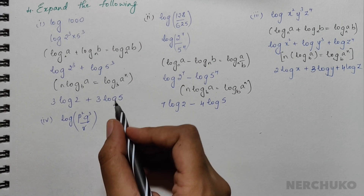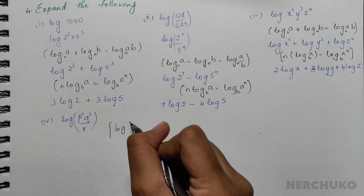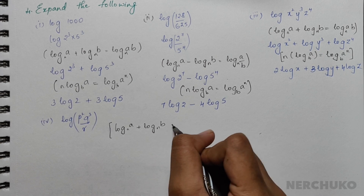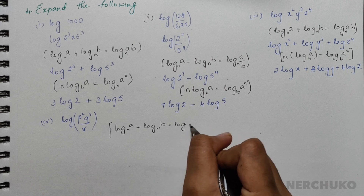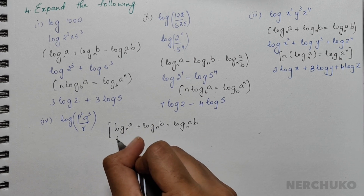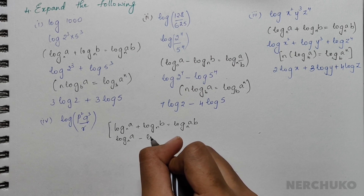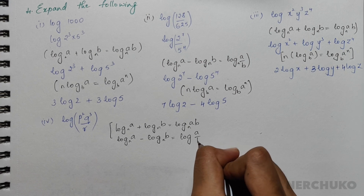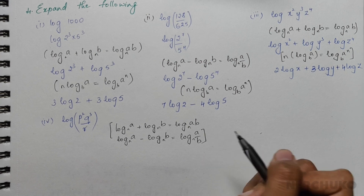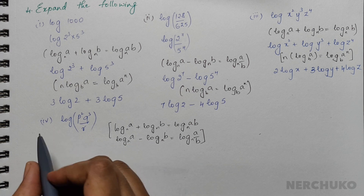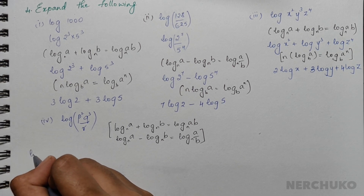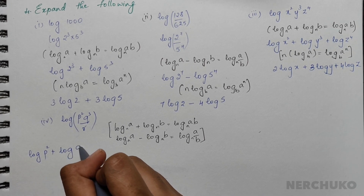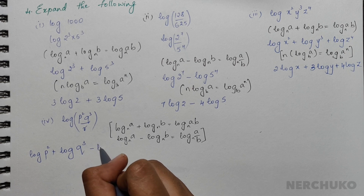For the fourth bit, I have log(p² · q³ / r). Using the formula log a + log b = log(a·b) for multiplication and log a minus log b = log(a/b) for division, I would get log(p²) plus log(q³) minus log r.